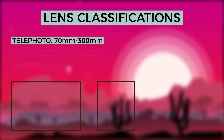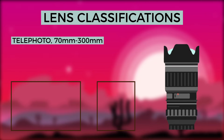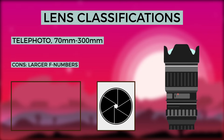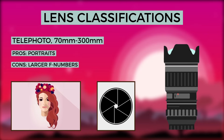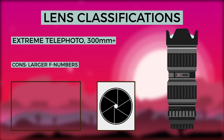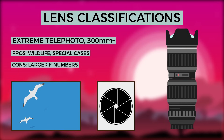Telephoto lenses typically start around 70 millimeters and end around 300 millimeters. Portrait lenses fall in this range, and as you increase focal length, telephoto compression will cause foreground and background objects to appear close together. Extreme telephoto lenses round out the bunch with focal lengths exceeding 300 millimeters. These lenses are used for wildlife and situations where extreme magnification is required.